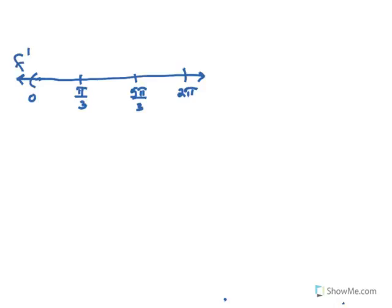Remember that we are looking at the sign of the derivative, so it's into that derivative we're substituting. The derivative was 1 half minus cosine of x. It's at pi over 3 and 5 pi over 3 that the derivative equaled 0, so that's why I put the little zeros there. If we pick a value in between 0 and pi over 3, maybe pi over 4, we get a negative answer. Then if we choose something between pi over 3 and 5 pi over 3, maybe pi over 2, we do get a positive value.